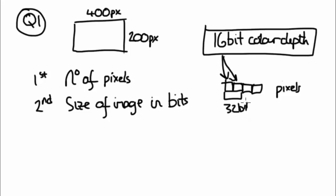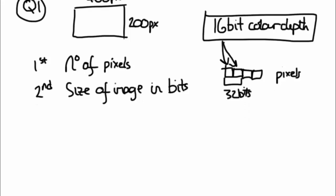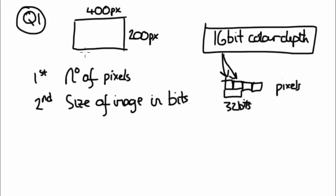To work out the number of pixels, you basically just say 400 times 200, and then you times it by 16, and that gives you the number of bits.